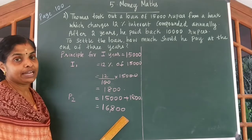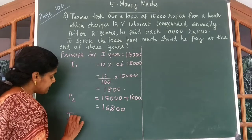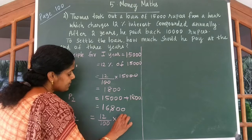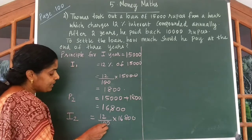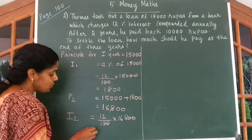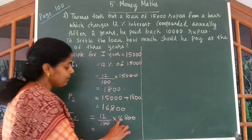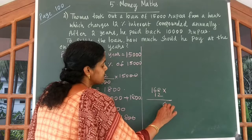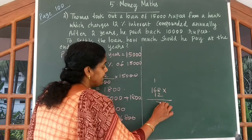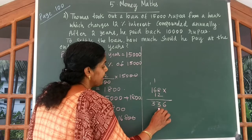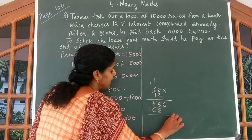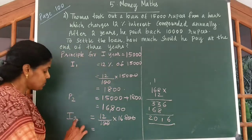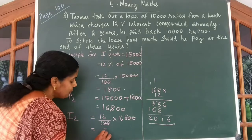Now we have to calculate the interest for this amount. I2 = 12 by 100 of ₹16,800. We can cancel 2 zeros with 2 zeros, then multiply 168 by 12. The interest for the second year is ₹2,016.